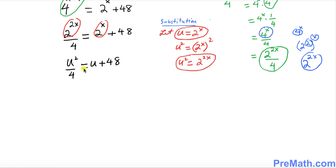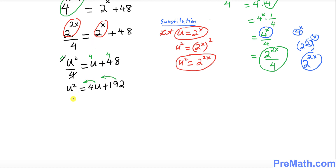To get rid of the 4 in the denominator, multiply across the board by 4. The 4s cancel, and we end up with u² equals 4u plus 192. Moving everything to the left-hand side gives u² minus 4u minus 192 equals 0.